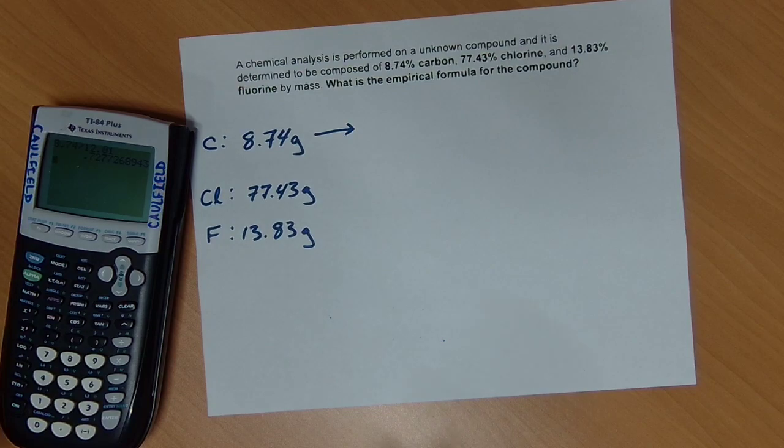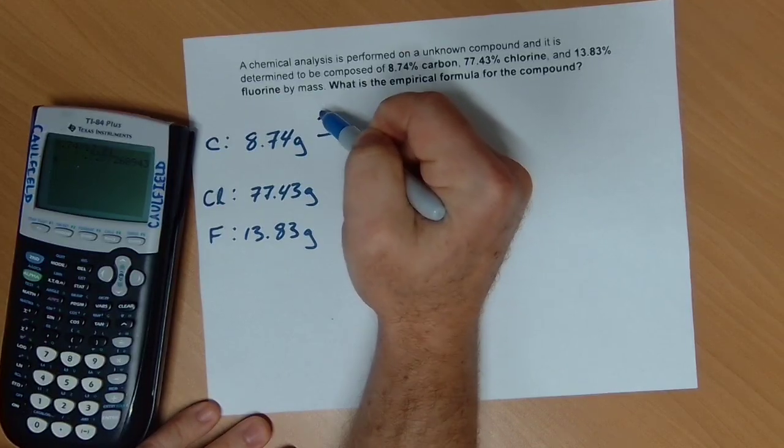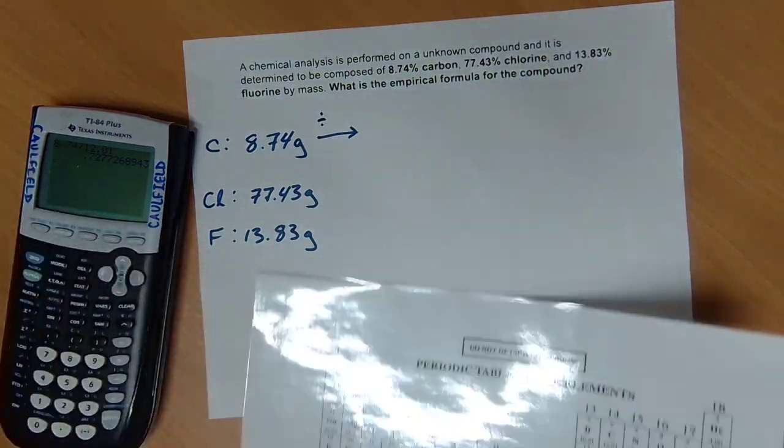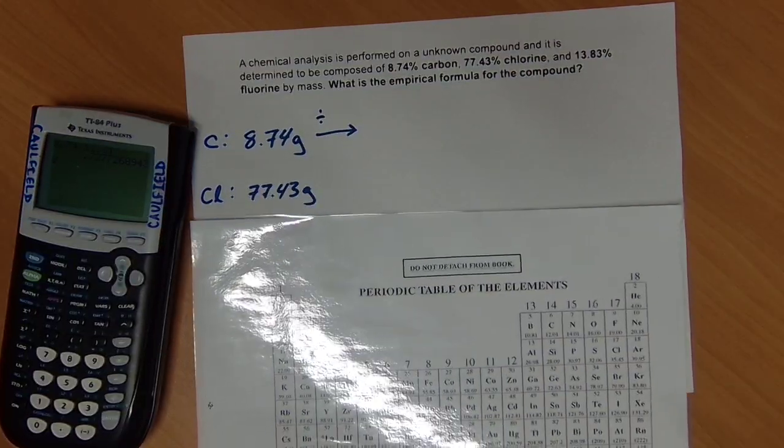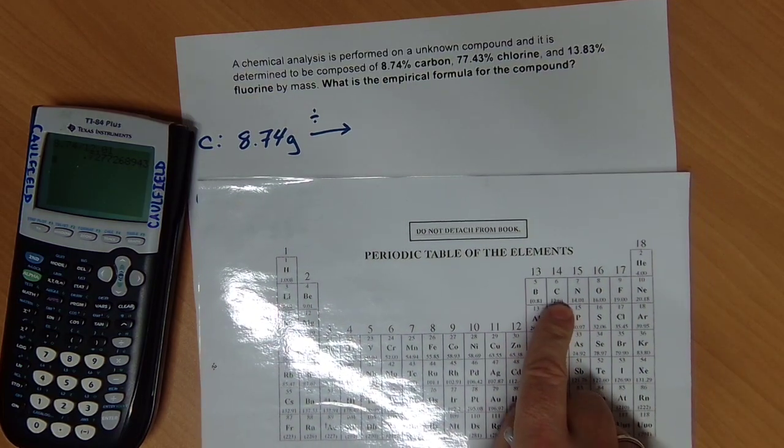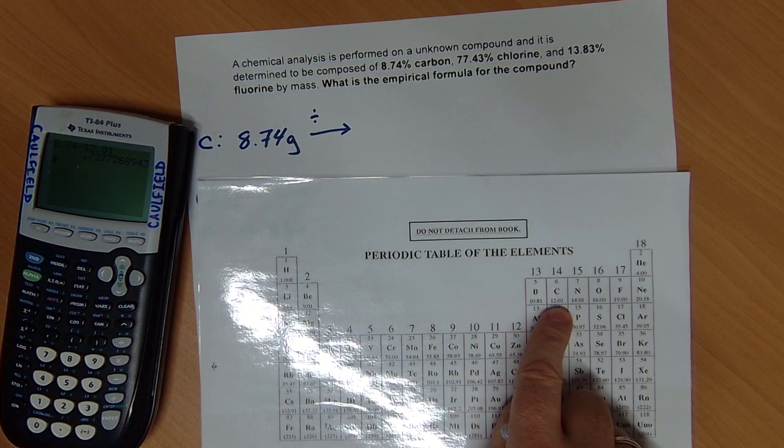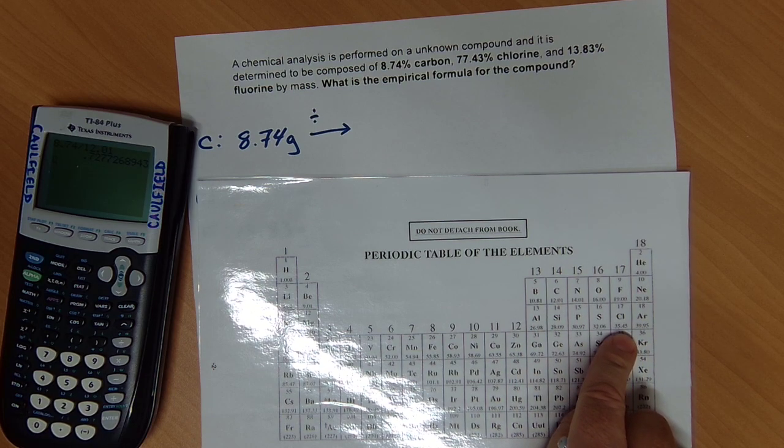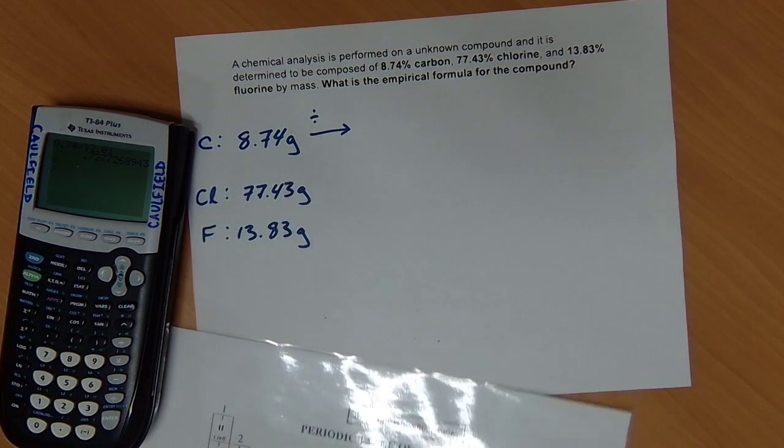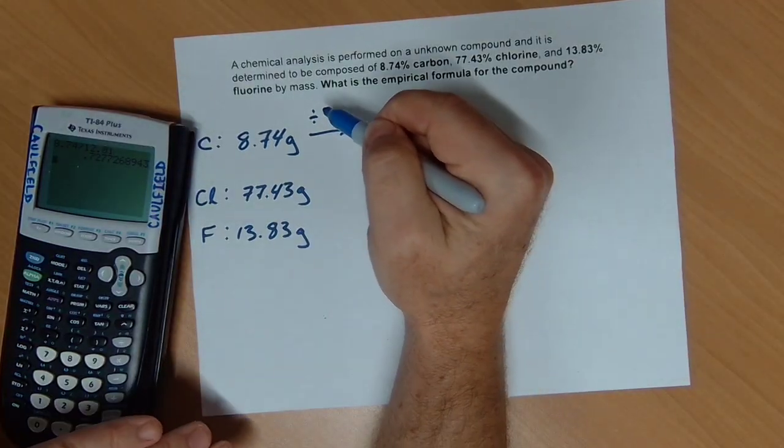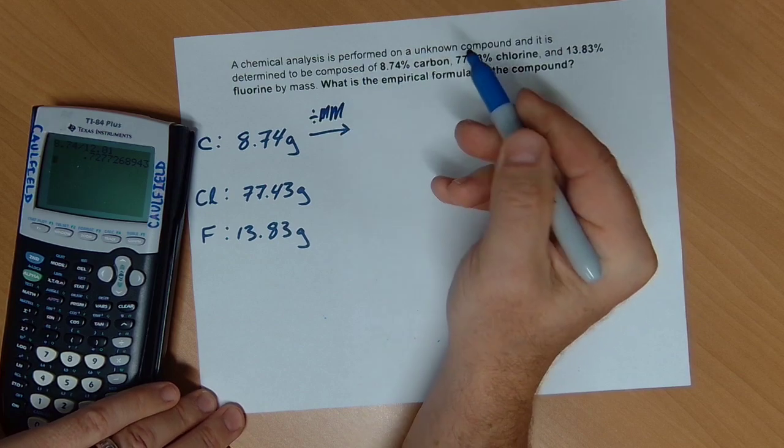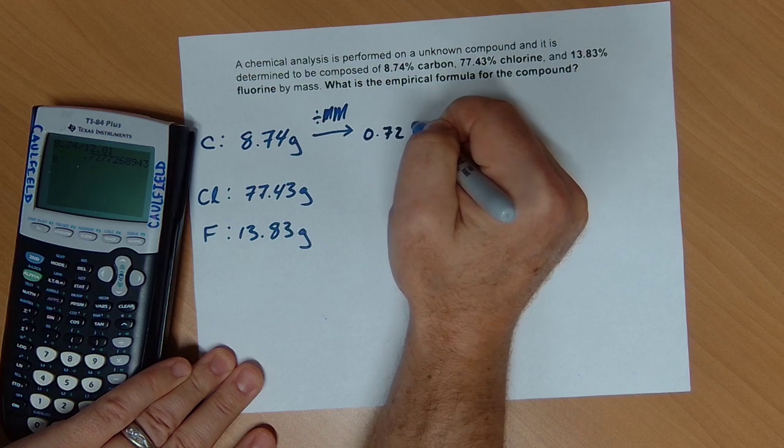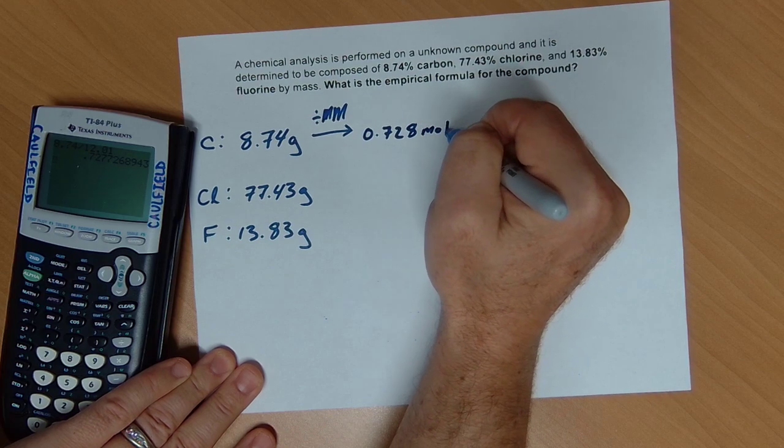So I do this across the board, each for its unique molar mass. And so I'm pulling my molar masses from my handy dandy. This is the AP chemistry periodic table. So I'm going to be pulling, it might be hard for you to see, 12.01. Fluorine is going to be 19. And chlorine is going to be 35.45. And so I'll say divide by molar mass here. This one we already did. This is 0.728 mole. This is for carbon.